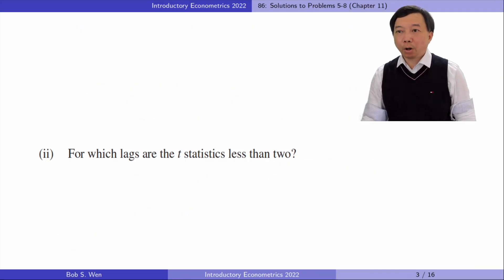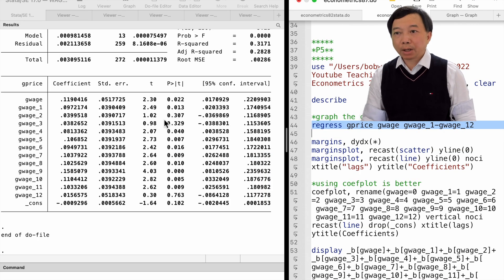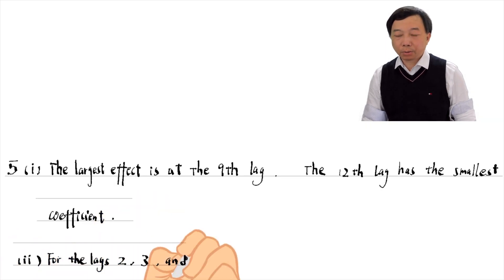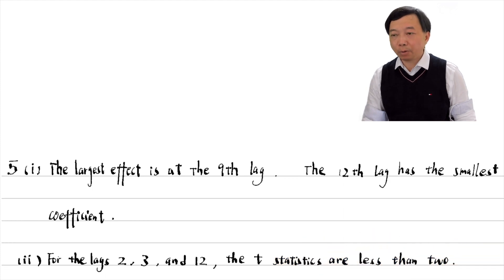In part 2, for which lags are the t-statistics less than 2? From the result window, we see that for lags 2, 3, and 12, the t-statistics are less than 2. The t-statistic equals the coefficient divided by its standard error.